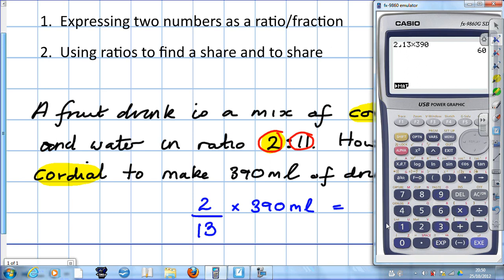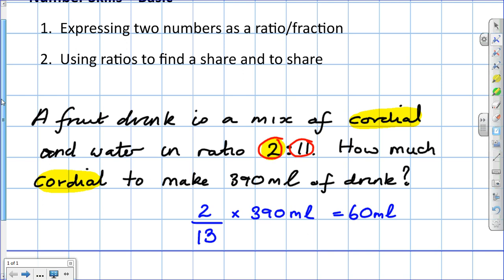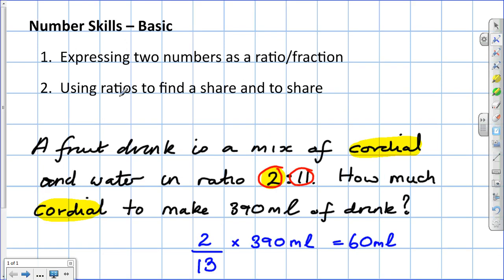Let's recap. Basic number skills. We need to know how to express 2 numbers as a ratio or fraction, and be able to see the link between ratios and fractions. We also need to be able to use ratios to find a share and to share. The key thing is, when we're finding out or sharing, we know the total, we have to use the total number of shares.